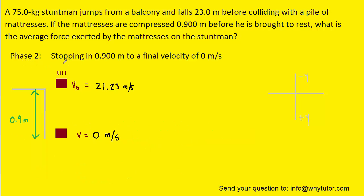So now on to phase 2, in which the stuntman is falling 0.9 meters to a final velocity of 0 meters per second. Notice that we have now called the final velocity 0 meters per second. Also notice that we change the displacement to 0.9 meters. Now in this case the acceleration will not be 9.8 meters per second squared. Why not?